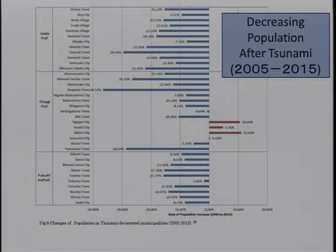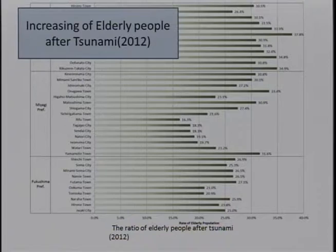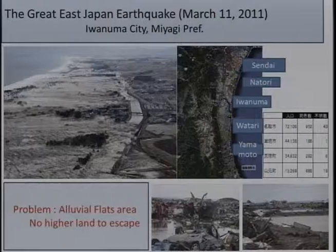We have two basic trends: one is decreasing population, which increased after the tsunami, and also increasing elderly population — it's just a common phenomenon. So we have to struggle with these big issues. Today, I'm going to explain about the reconstruction process of the alluvial flat area.